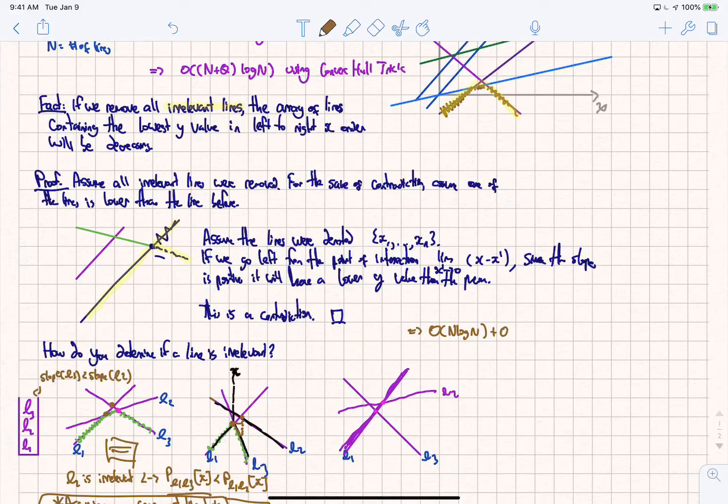Afterwards, for every single query, we're going to have to do a log n search to find the actual answer. Now why is it a log n search? Because we're going to have to be looking through all of the different lines to determine at which point it's maximum. Because they're decreasing, we can simply perform a binary search and that binary search will retrieve the answer.